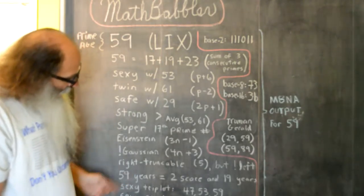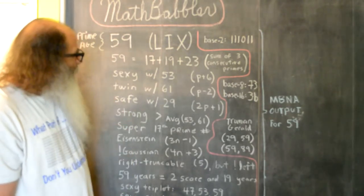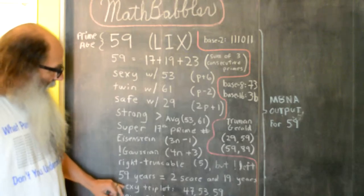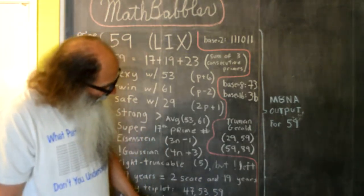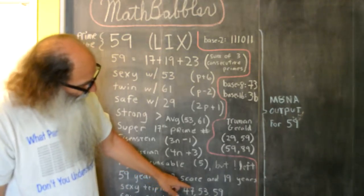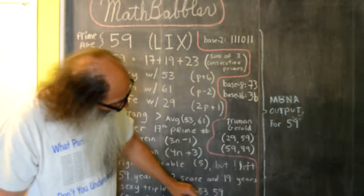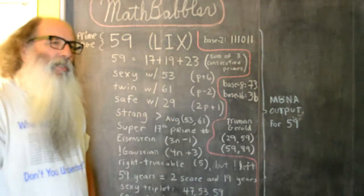Getting back into the sexy primes, 59 is in the sexy triplet 47, 53, 59. All three of these prime numbers differ by 6.